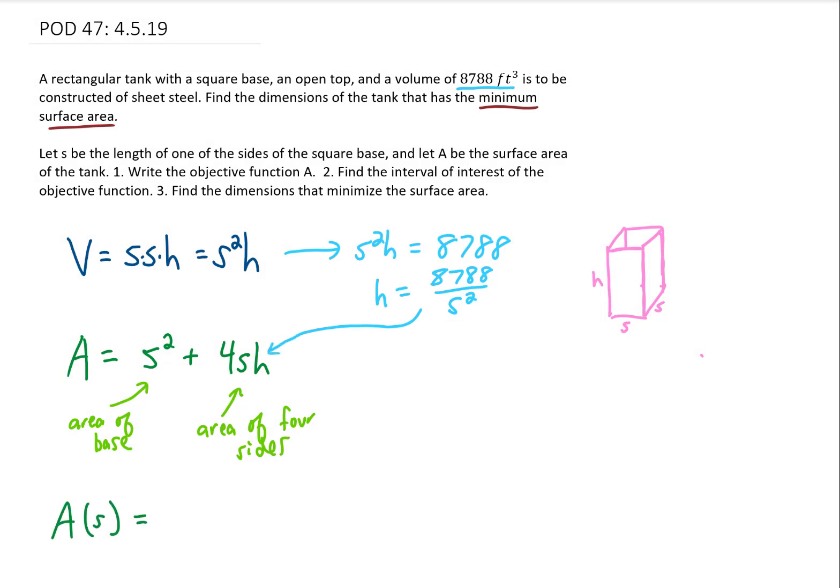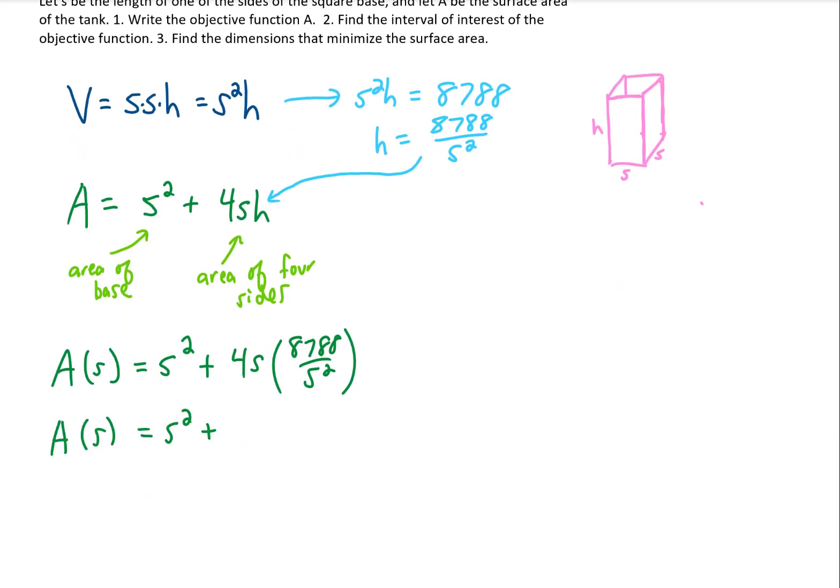It's a function of S and it's S squared plus 4S times 8788 over S squared. Now you might notice that one of these S's is going to cancel. You also might want to multiply 4 by 8788. Doing that gives us 35,152 over S.